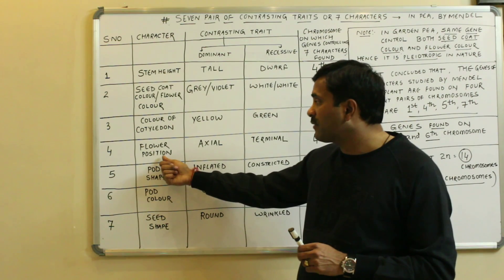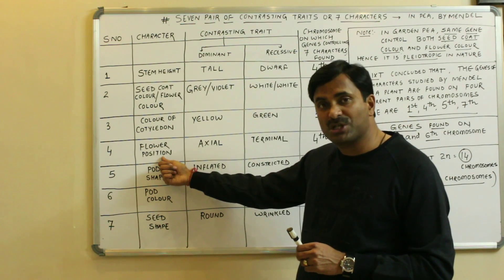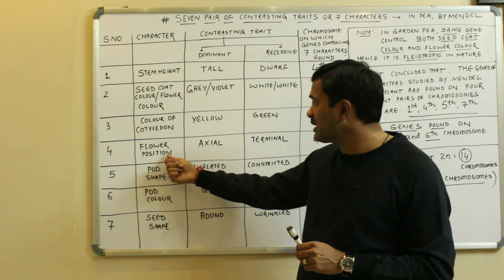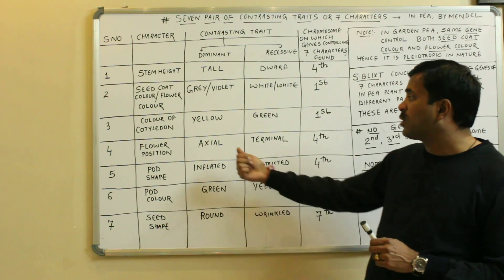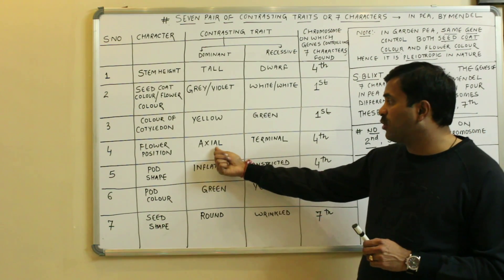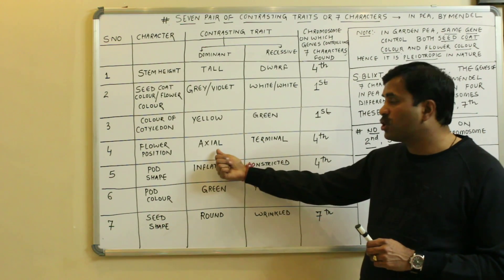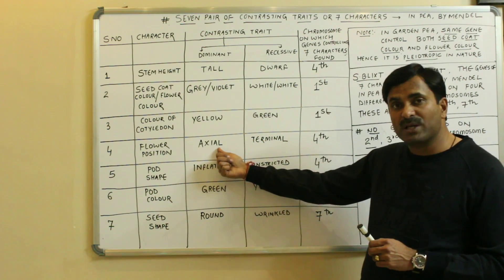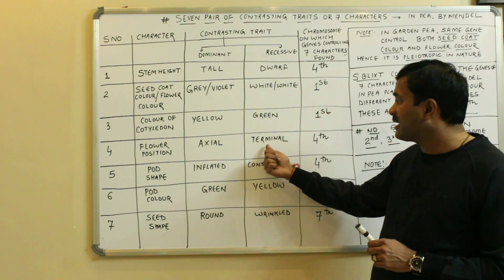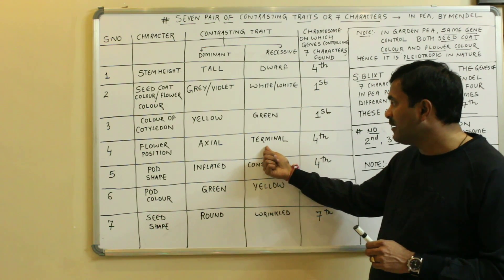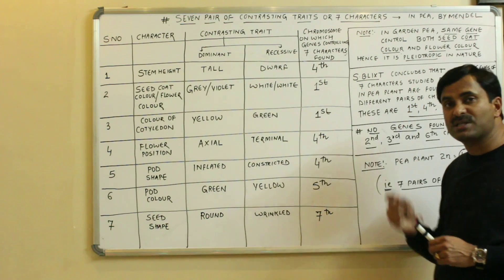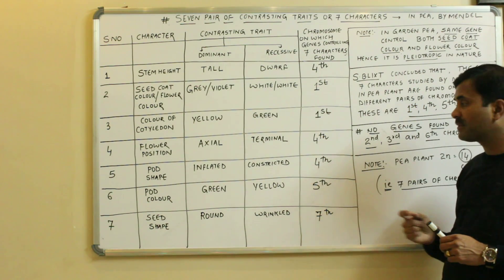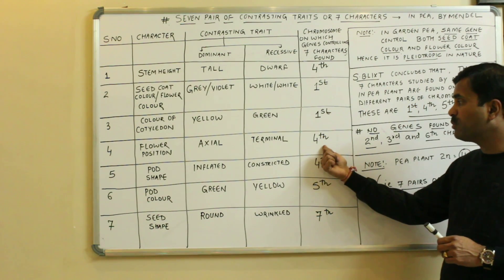Fourth character: flower position. Flower position has two contrasting traits — one dominant and one recessive. The dominant form is called axial and the recessive form is called terminal. The gene controlling this character is found on chromosome number four.